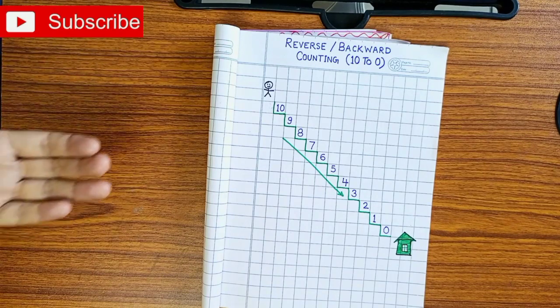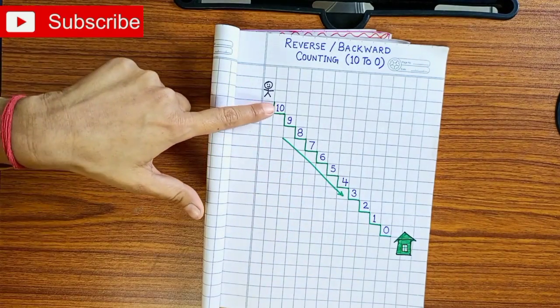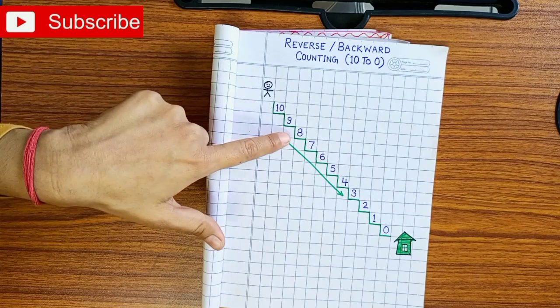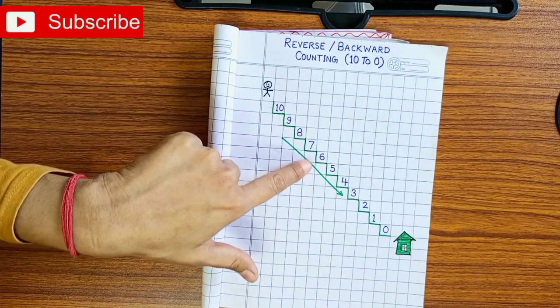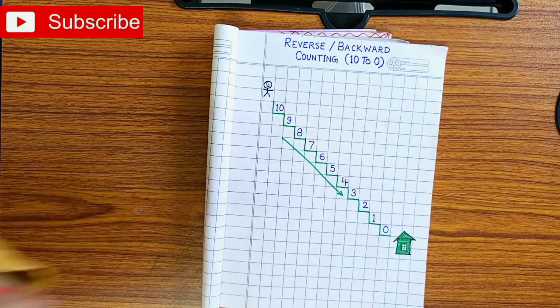For the reverse counting, we have to move back. Just like 10, 9, 8, 7, 6, 5, 4, 3, 2, 1, 0.